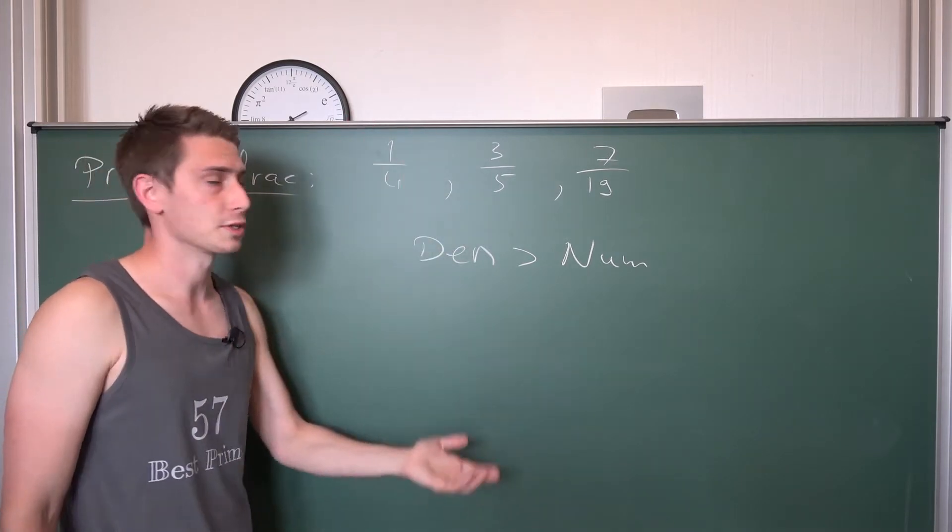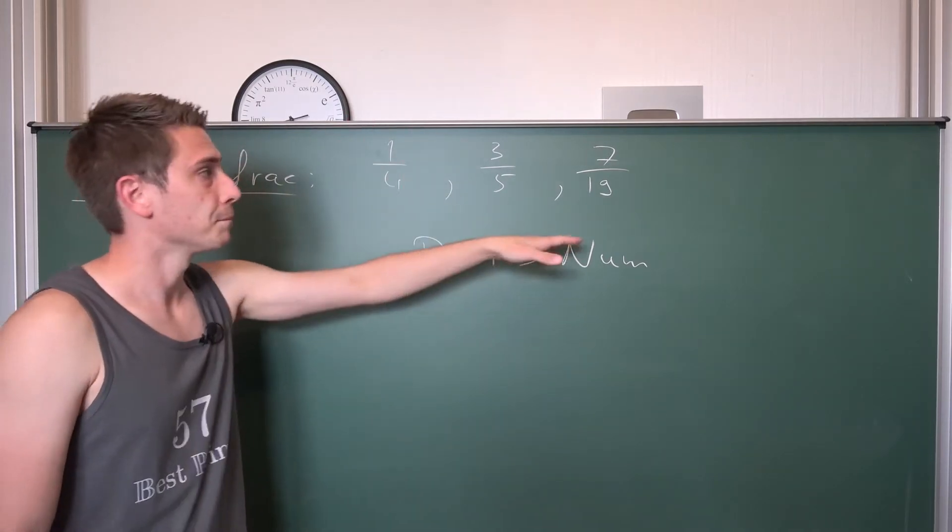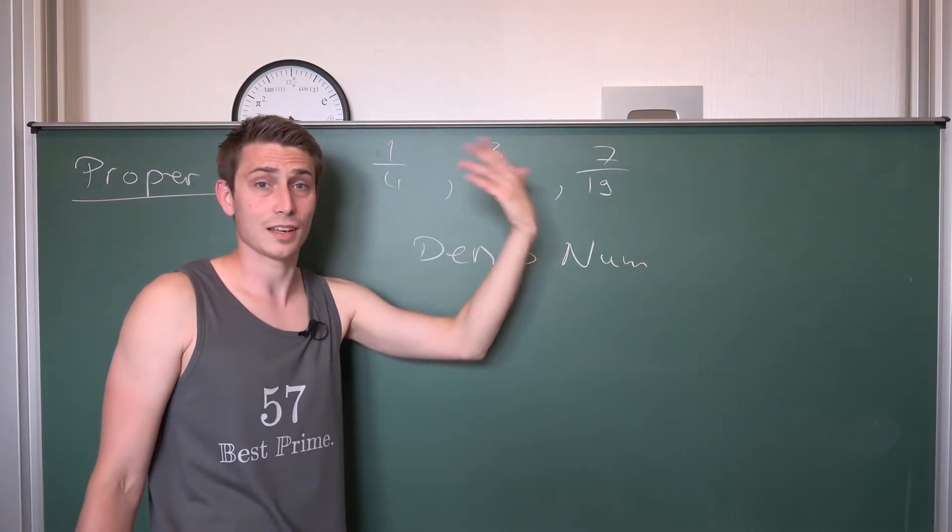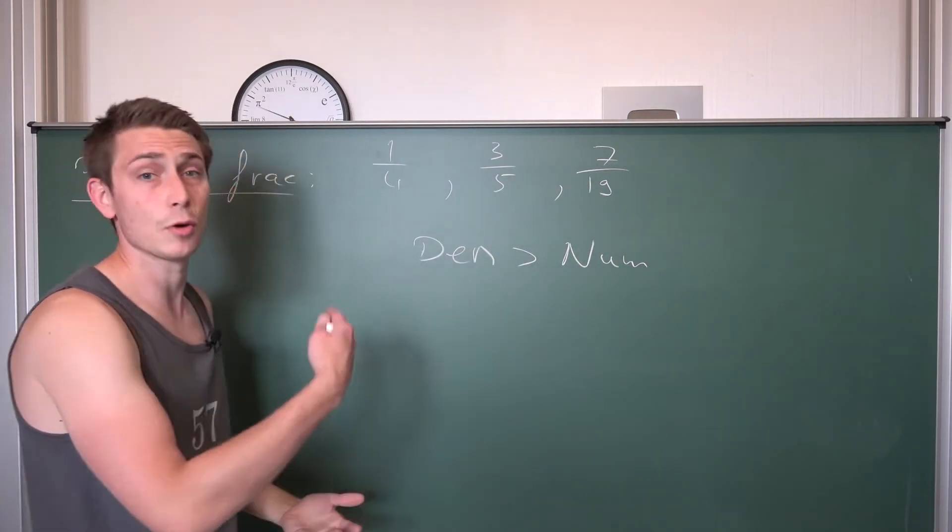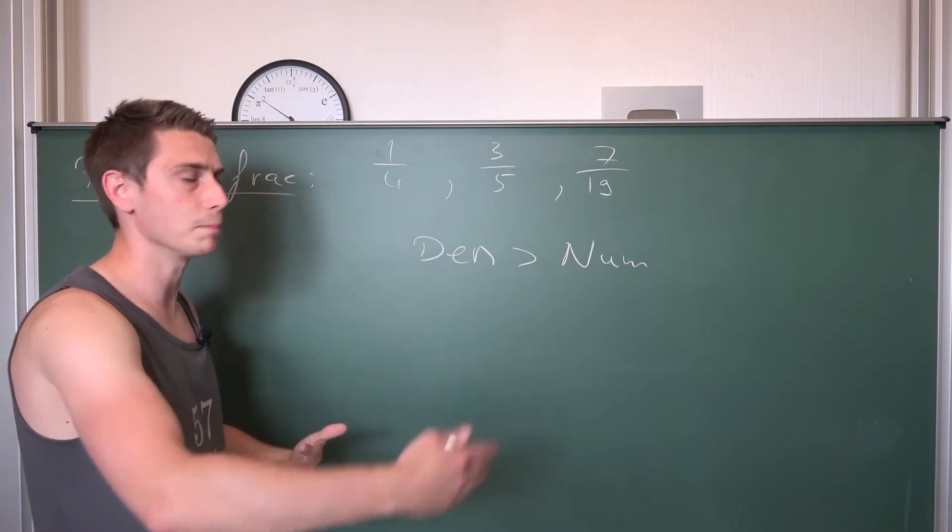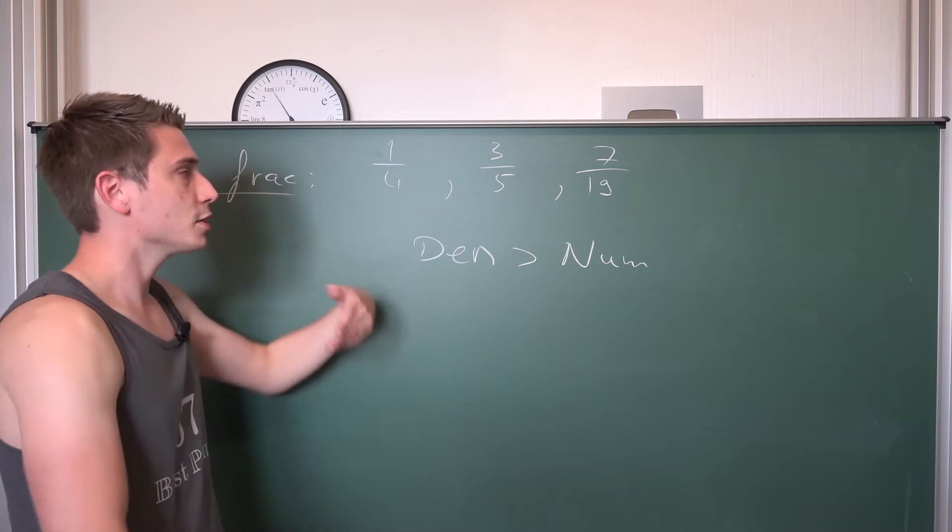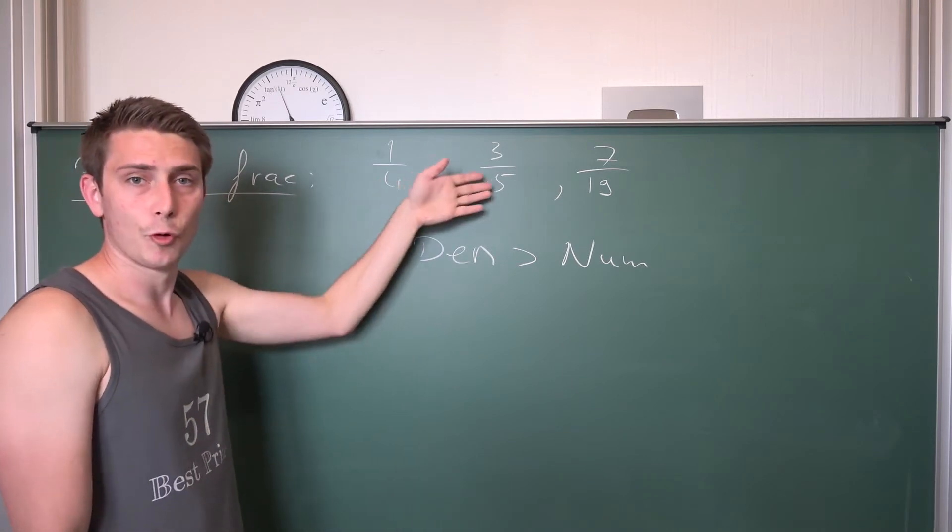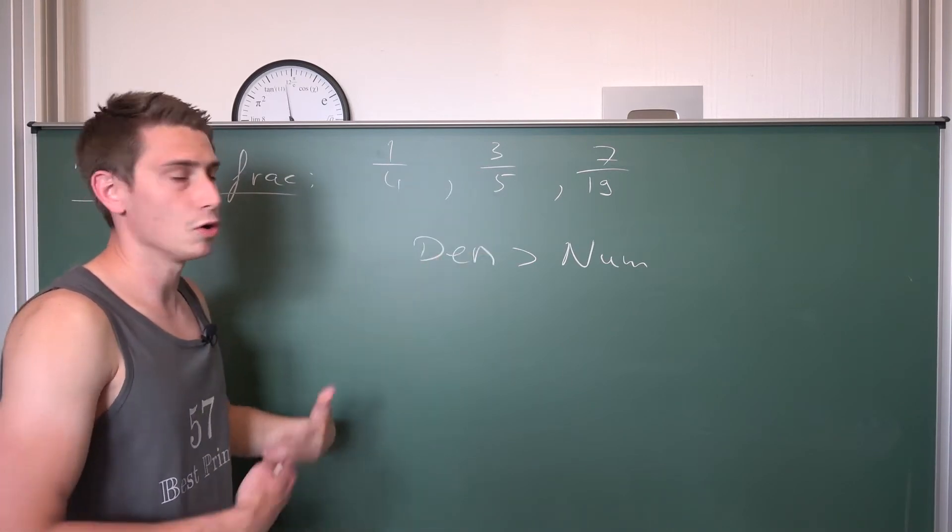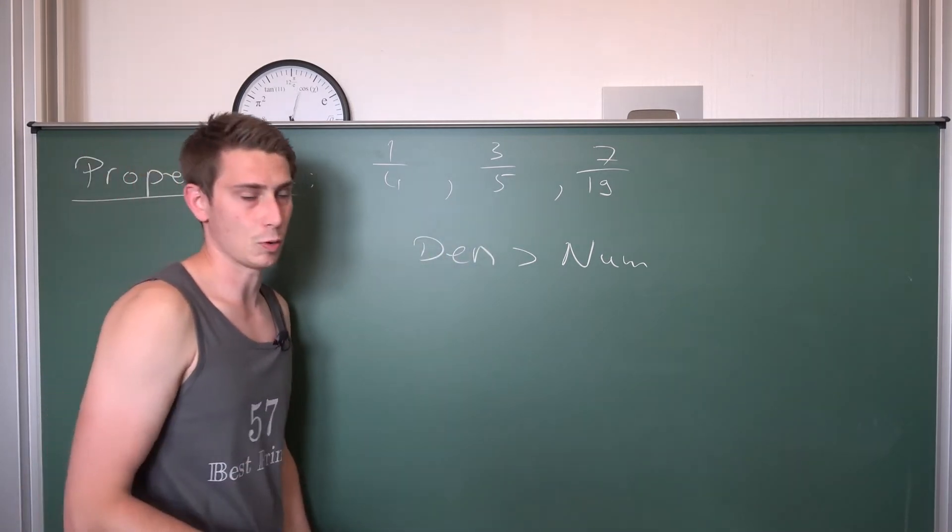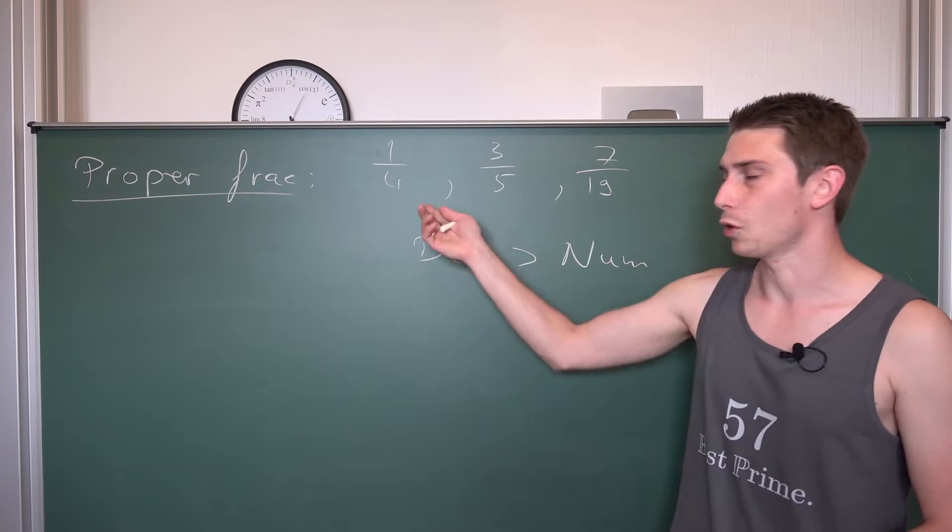3 fifths is 0.6, it's between 0 and 1. 7 over 19 is something less than a half, it's between 0 and 1. I hope I get the point across basically. This is something that you can also remember. So if you know the decimal expansion for some proper fraction, then you also know that it's a proper fraction if it's bounded between negative 1 and 1 basically, depending on your sign.